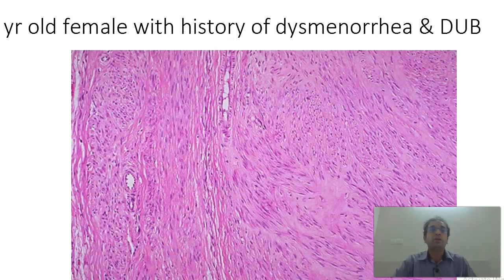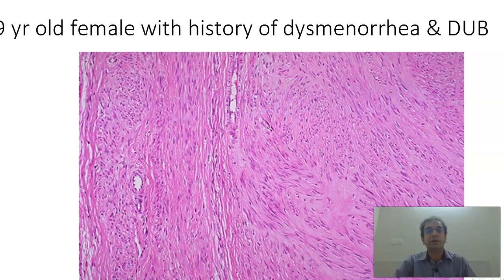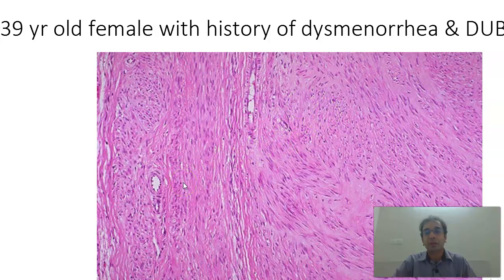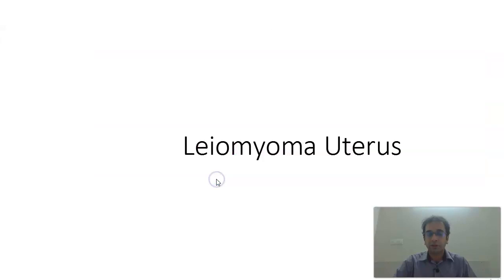Next, history of a 39-year-old female with history of dysmenorrhea and dysfunctional uterine bleeding. What you find here is a nice tumor comprised of smooth muscle fibers in crisscrossing fascicles. This is likely to be a leiomyoma. A leiomyoma slide can also be kept for hyaline change.